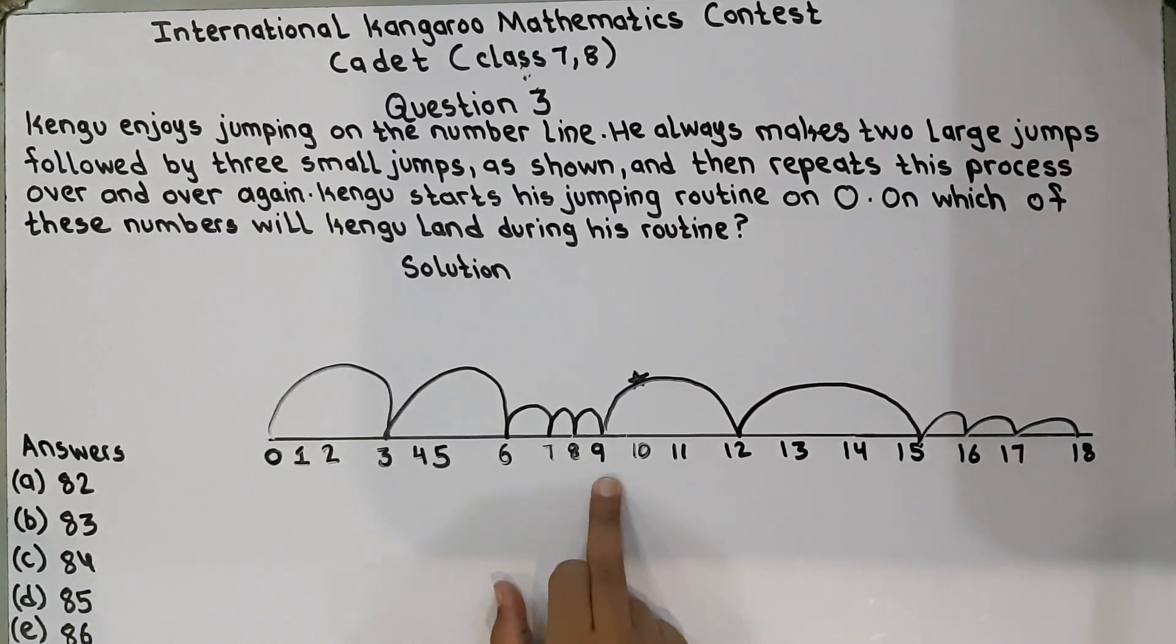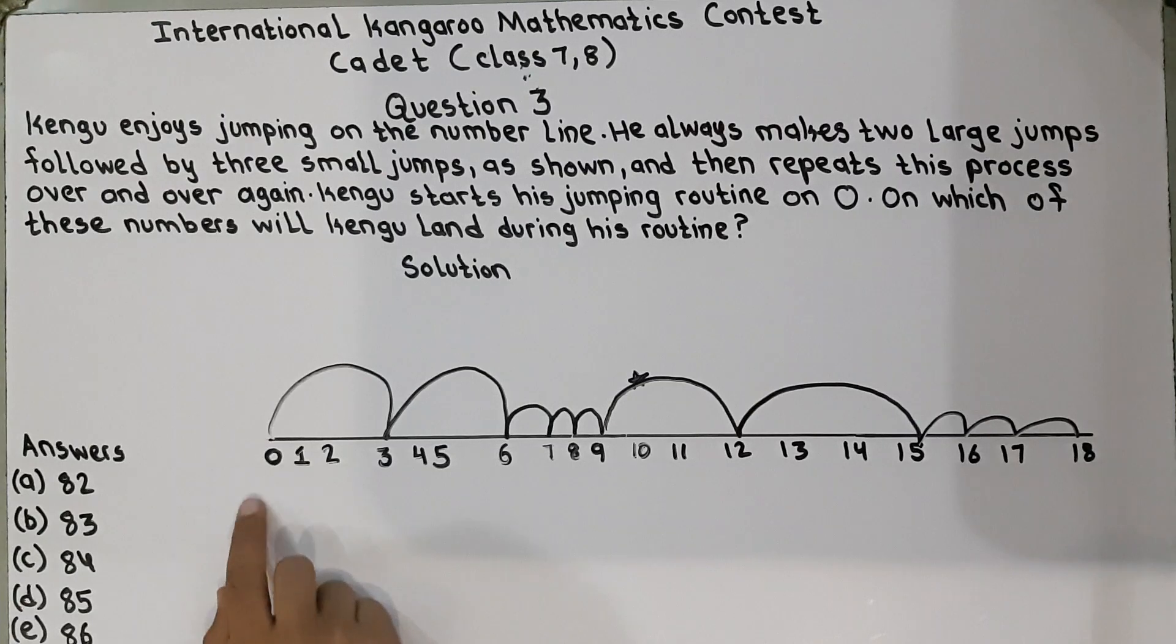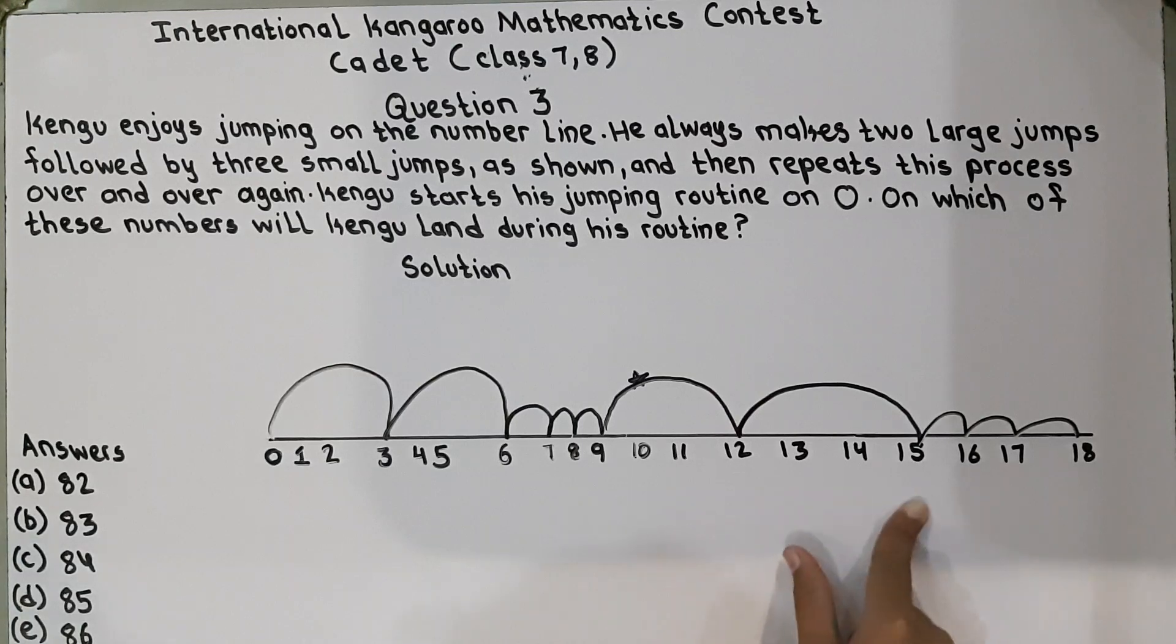No, we will not count 9. We will count from 10 because he starts here. He starts from 0 and here he starts from 9. So between them distances of 9. So now we have to find on which of these numbers will he land. So we will repeat this process again.